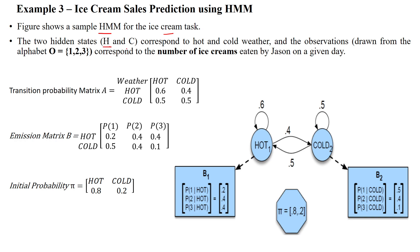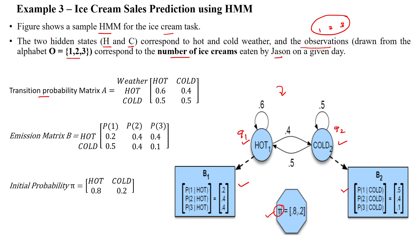Two hidden states are given: one is hot or cold on the given day, which gives the observations drawn from the alphabet. The observations are denoted using integer numbers 1, 2, 3, representing the number of ice creams eaten by Jason on a given day. The transition probability matrix is constructed from the given diagram. We have the hot state and cold state — two hidden states, Q1 and Q2 — and we have the emission probabilities. This is based upon the hot state, and this is based upon the cold state. The initial probability is denoted with pi, which is the start state.